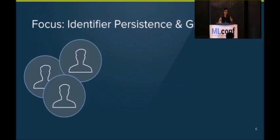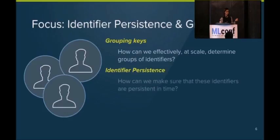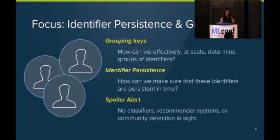So I'm only going to talk about two things because this is a short talk. One is about identifier persistence, and one is about grouping keys. So the focus I'm really going to work on first is grouping keys. And so how can we effectively, at scale, determine groups of identifiers? The second one is going to be persistence. So once we've made those groupings, how do we keep those groupings in time? Because we want to make sure that if we have a cluster A, B, C, next week it becomes A, B, C, D, that A, B, C, D inherits all of the structure from the previous clustering. And then the spoiler alert is there are no classifiers in this talk, no recommender systems, and there's no community detection or clustering. If you have a problem with that, please talk to Nick Vasiloglu. He's the one who asked me to give this talk.